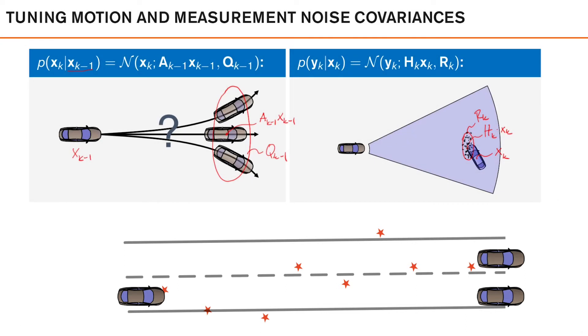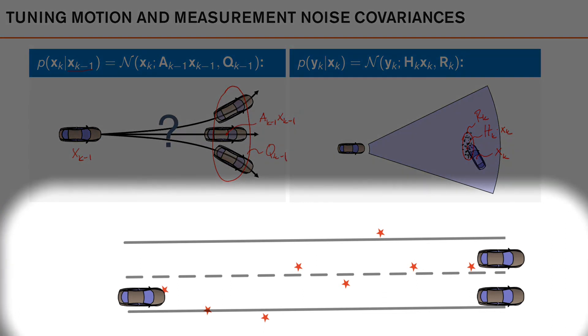So, if we instead have a good balance between process and measurement noise, the filter will produce estimates that are both behaving like we expect a car to behave and adapting according to what the measurements indicate, like this.